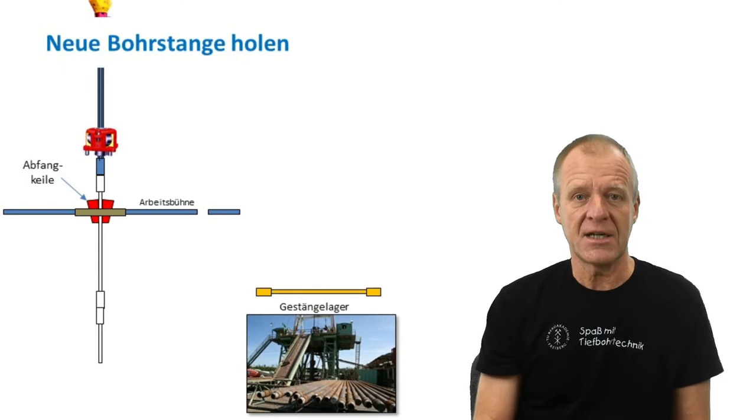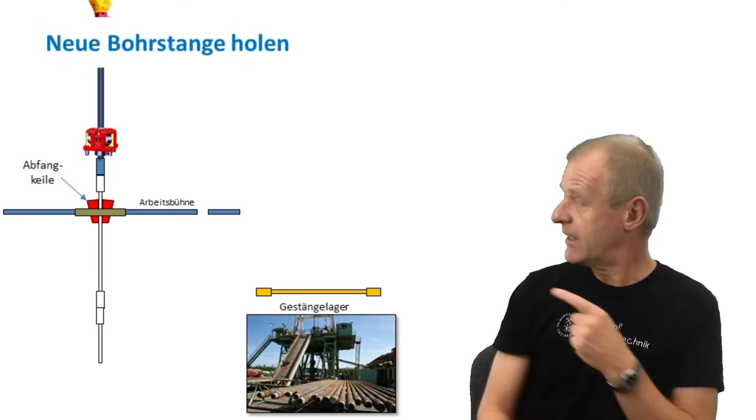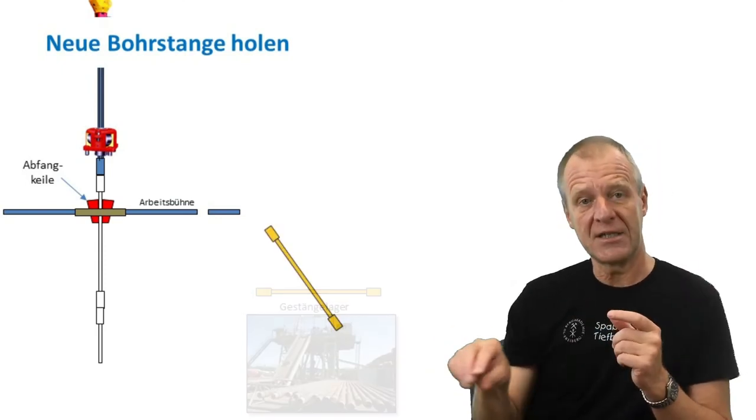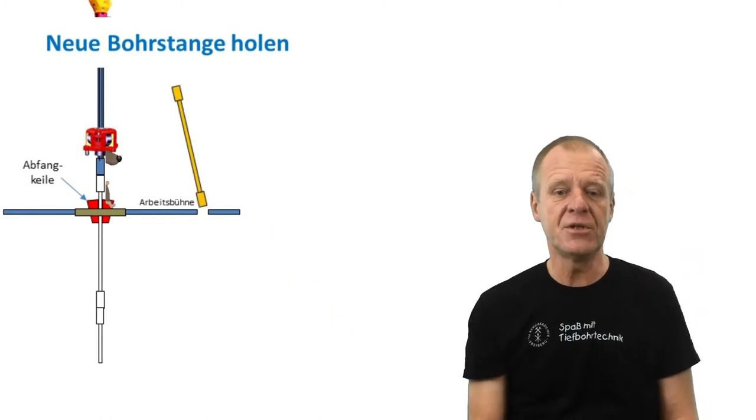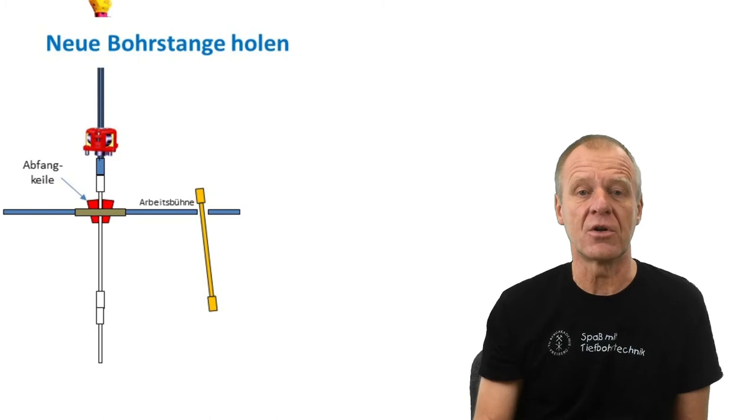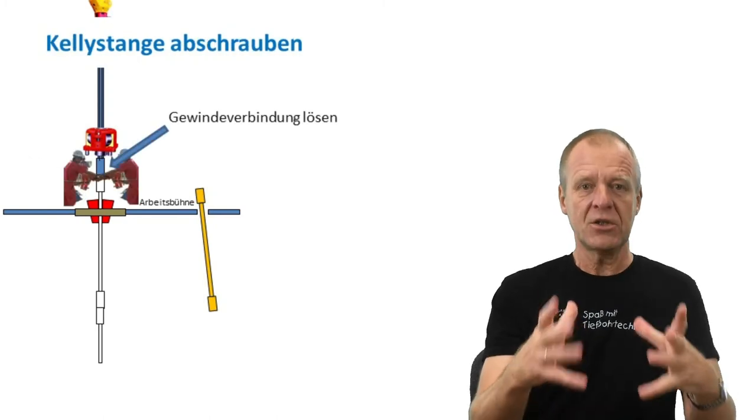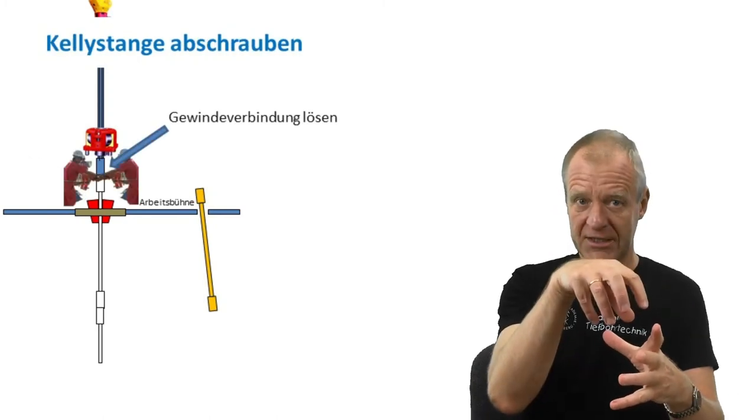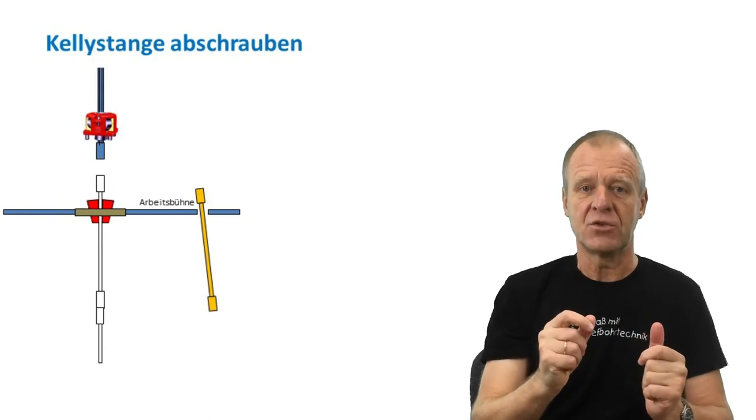We now need to get the new drill pipe to the rig floor. We lift it from the pipe rack to the rig floor and place it in a hole called the mousehole. Now we can unscrew the Kelly rod from the drill string, push it aside, and lower it onto the new drill pipe.